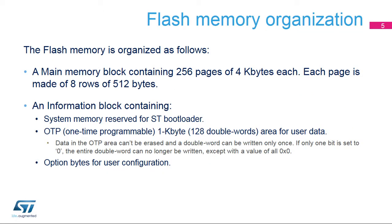The flash memory contains 256 pages of 4 kilobytes each. Each page is made of 8 rows of 512 bytes. Next to the main memory block, there is an information block which contains three parts. The first part is the system memory, which is reserved for the STMicroelectronics bootloader. When selected, the device boots in system memory to execute the bootloader. The second part is a 1-kilobyte, one-time programmable area. The OTP area cannot be erased, and a double word can be written only once.